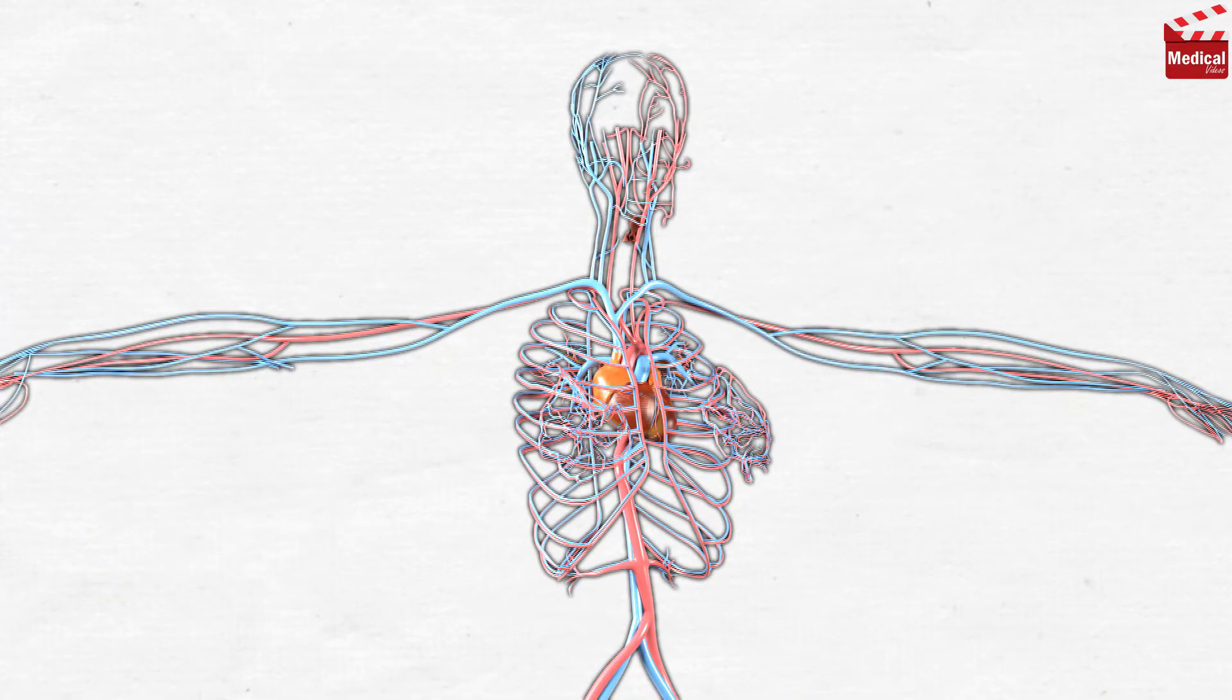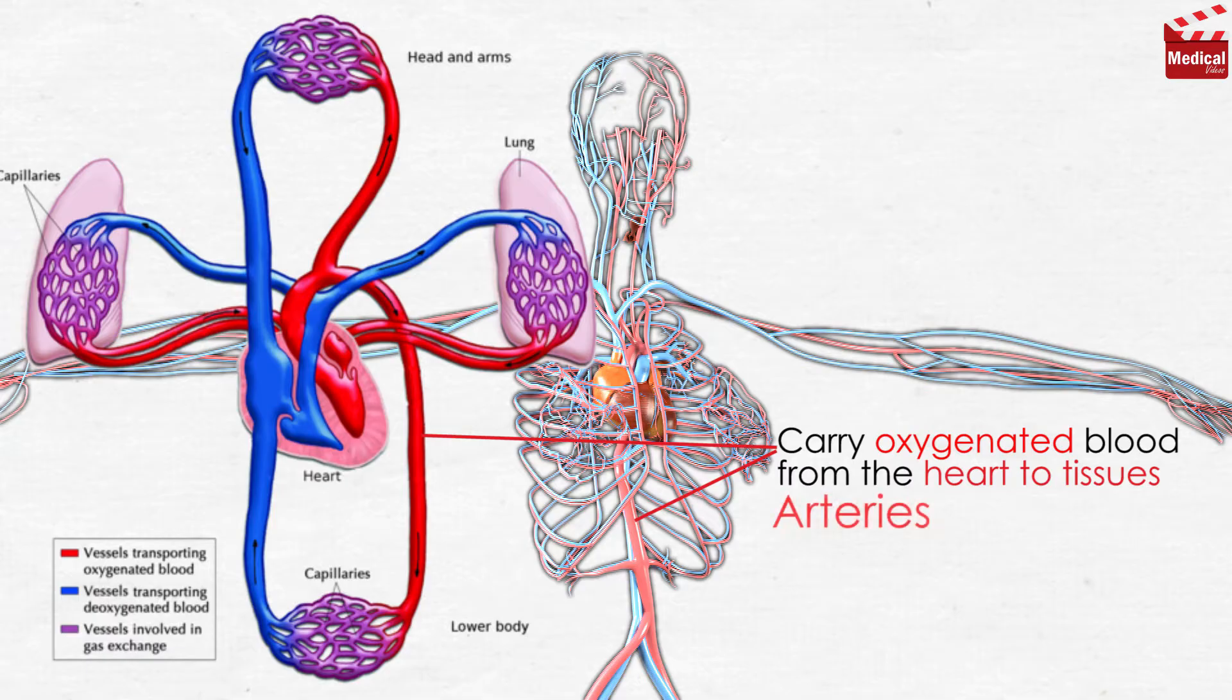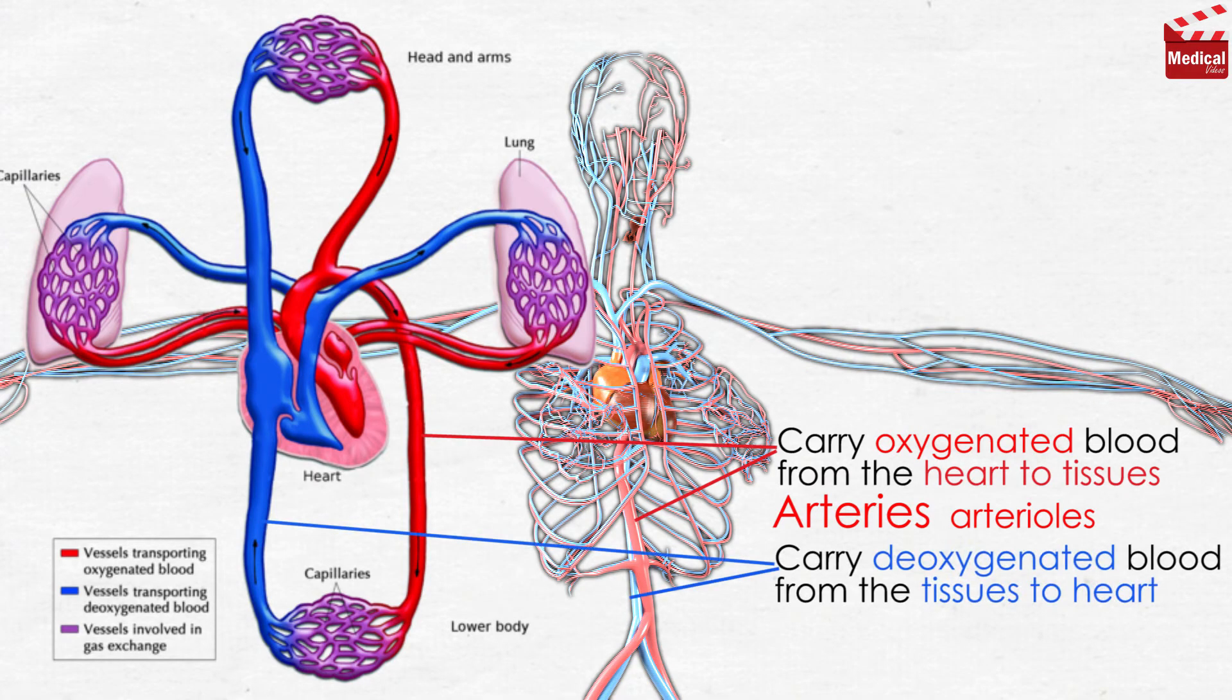The blood vessels are classified to the type that carries oxygenated blood from the heart to tissues, and they are called arteries. The smaller arteries are called arterioles. And the type that carries deoxygenated blood from the tissues to the heart, the veins, and the smaller veins are called venules.